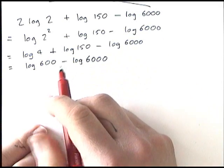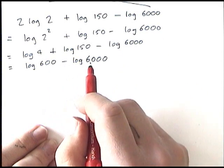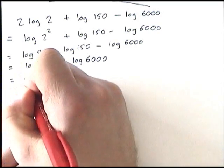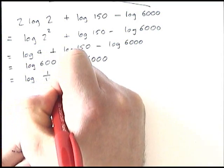Now the subtraction rule, that's going to simplify to log 600 divided by 6000. 600 divided by 6000 is 1 over 10.